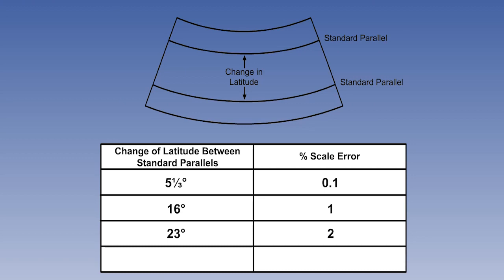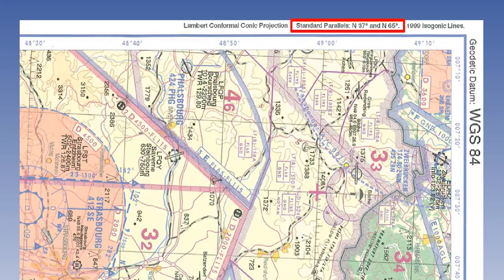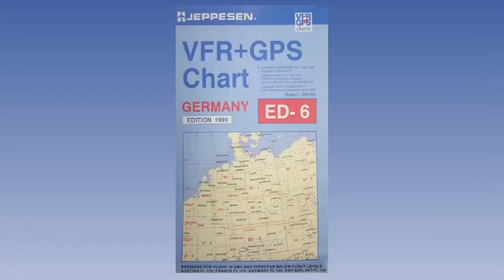Once we get to a larger separation of latitude between the standard parallels, the scale distortion increases. 28 degrees between the standard parallels also has a significance for us. The Jeppesen series, which includes the ED6, uses standard parallels of 37 north and 65 north. They use these for the whole of Europe.